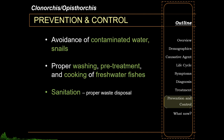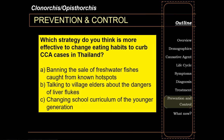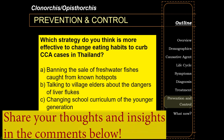Public health measures to prevent and control infections include avoidance of contaminated water, ecological control of snails, proper washing, pretreatment and cooking of freshwater fishes, and education and sanitation including proper human waste disposal. As a final note: which strategy do you think is more effective — changing eating habits to curb cholangiocarcinoma cases in Thailand? Discuss this with your classmates, professors, and local politicians.